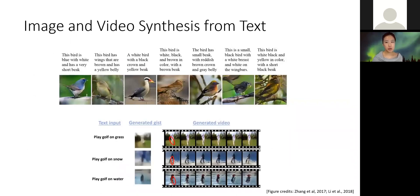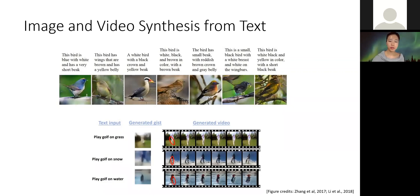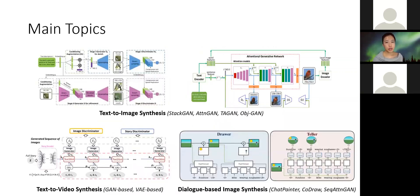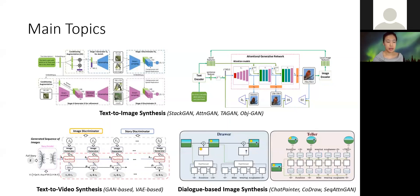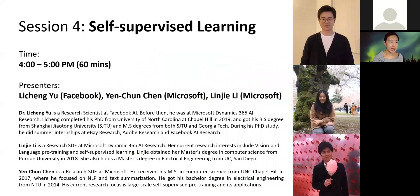In this session, we will introduce both image and video synthesis tasks where, given a textual description, a model can automatically generate a realistic image or video clip to visualize the description. For text-to-image, we will introduce state-of-the-art models such as StackGAN and AttnGAN. For text-to-video synthesis, both GAN-based and VAE-based models will be discussed, such as StoryGAN and T2V. We will also cover the latest dialogue-based image synthesis work, such as Chat Painter. All have very interesting applications, and Yu has been working on many of these tasks.